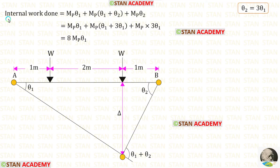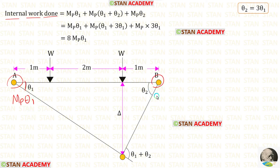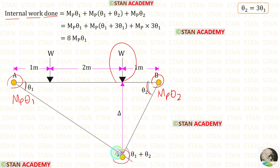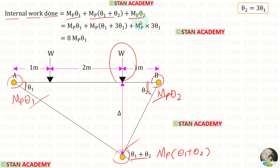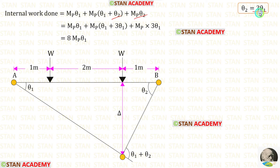Now let us find the internal work done. At point A we have a plastic hinge — we multiply mb with angle theta1. At point B we have a plastic hinge — we multiply mb with angle theta2. Adding these three terms and substituting theta2 as 3 theta1, we get the internal work done.